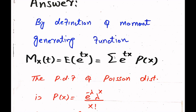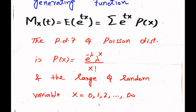In the continuous case we use an integral. The probability mass function of the Poisson distribution is e^(-λ) · λ^x / x!, and its random variable ranges from 0 to infinity. We now substitute these values into the MGF equation.